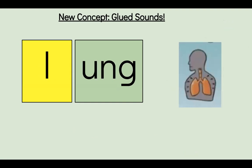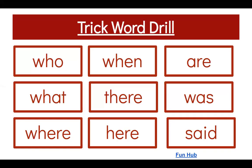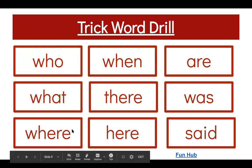Elbows up. Tap it out. L, O, N, G, the word is long. Echo and read these sight words with me. Who, what, where, when, there, here, are, was, said.